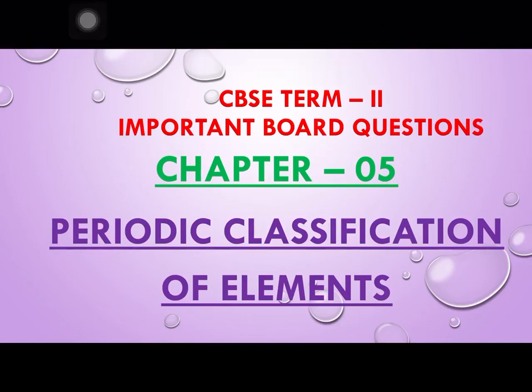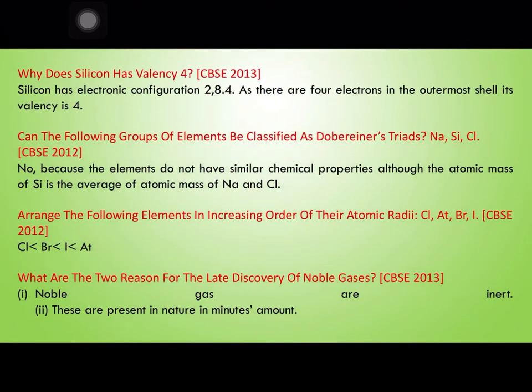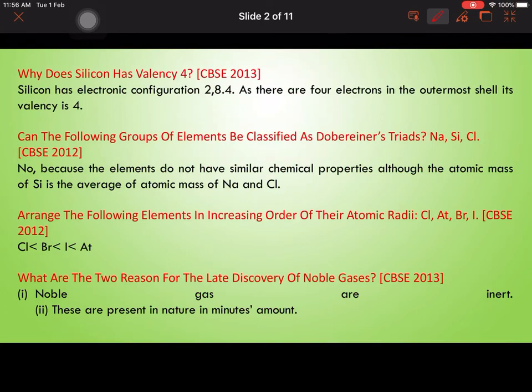Hello students, we are going to discuss important board questions from chapter 5, that is periodic classification of elements. First simple question: why does silicon have valency 4? Silicon's electronic configuration is 2,8,4, meaning its atomic number is 14, and that's why it has valency 4 — there are 4 electrons in its outermost shell.